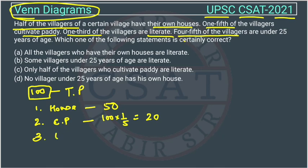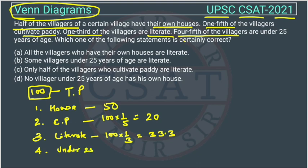One-third of the villagers are literate, so how many are literate? One-third of 100 means it will be 33.3. Now the fourth statement: four-fifth of the villagers are under 25 years of age. Four-fifth of 100 — five will cut into 100 four times — so this is 80.